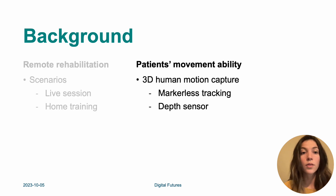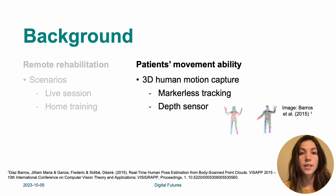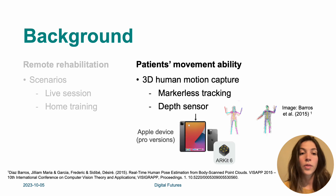For remote rehabilitation, we have identified two main scenarios: live session and home training. For the patient's movement ability, we need 3D human motion capture to get more accurate data. It needs to be markerless so it can be implemented at home and outside the lab. It's also good to have a depth sensor to improve estimations in the 3D environment. The depth sensor provides a point cloud of the human body, and this data can be used to improve 3D estimations. We therefore use the Apple device that has such a depth sensor, using ARKit 6 for these estimations and skeleton tracking.